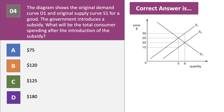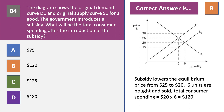The price falls from $25 to $20 and quantity increases from 5 to 6 units. The correct answer is B — consumer spending is 6 times $20 equals $120. Note that the producer receives $180 because they get $120 plus the subsidy — but the question asks about consumer spending, so the answer is B: $120.